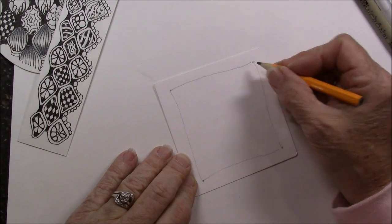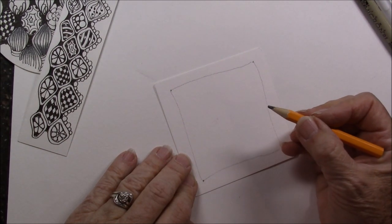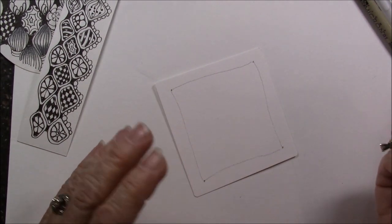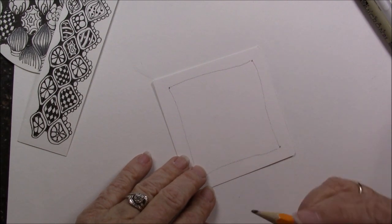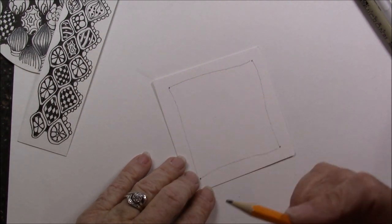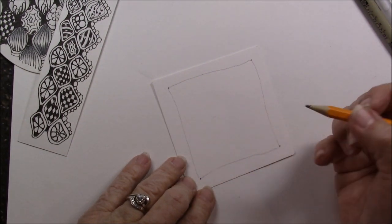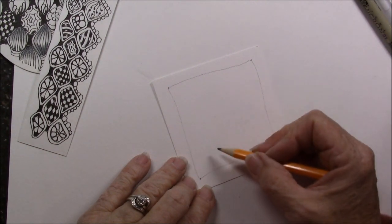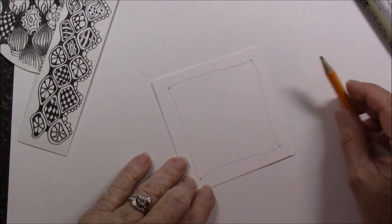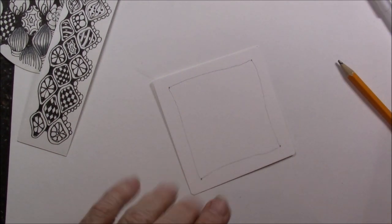I'm going to put my dots in the corner and my border, part of the eight steps of Zentangle. I'm grateful that I am able to do these lessons online. That's one of the steps, is to be grateful.